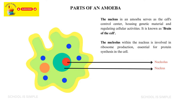The nucleus in an amoeba serves as the cell's control centre, housing genetic material and regulating cellular activities. The nucleolus within the nucleus is involved in ribosome production, essential for protein synthesis in the cell.